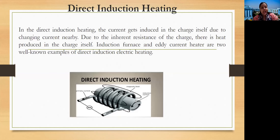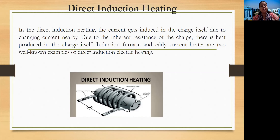In direct induction heating, which comes under high frequency heating, the current gets induced in the charge itself due to the changing current nearby. Due to the inherent resistance of the charge, heat is produced in the charge itself. Induction furnaces and AB current heaters are well-known examples of direct induction heating, where the heating element is kept near the charge and current flows through it. In the induction process, heat is produced in the charge with no direct connection between the heating element and the charge.